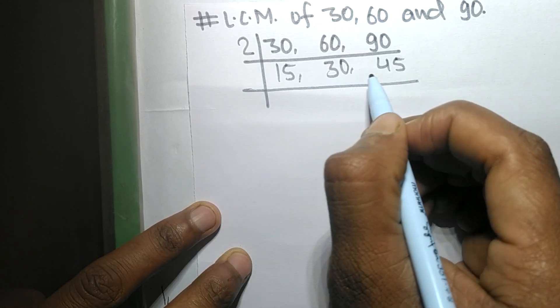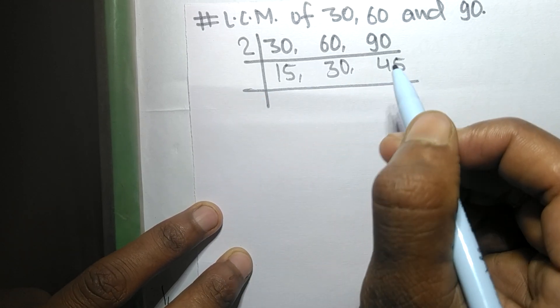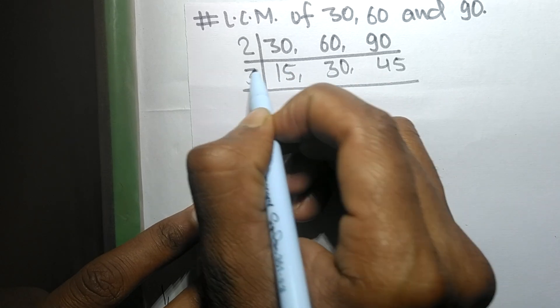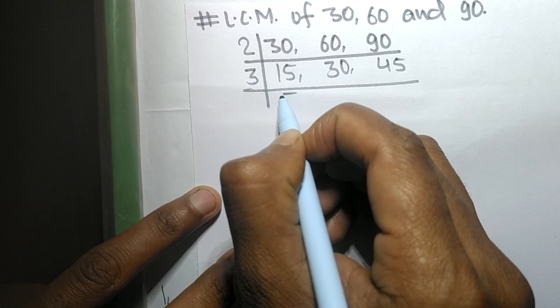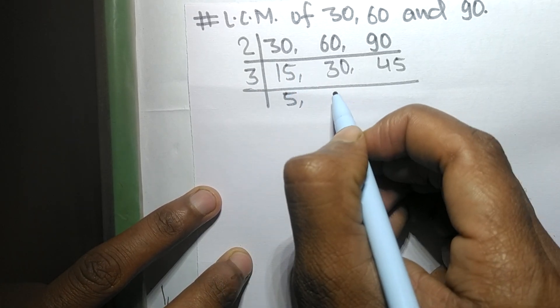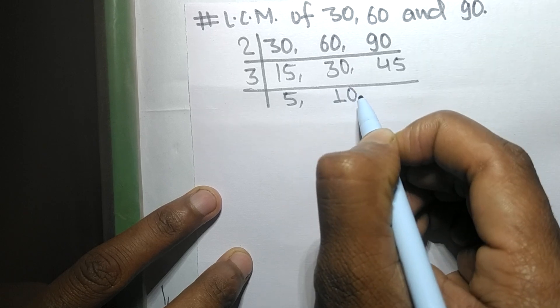Now these all numbers are exactly divisible by 3. So 3 times 5 means 15, 3 times 10 means 30,